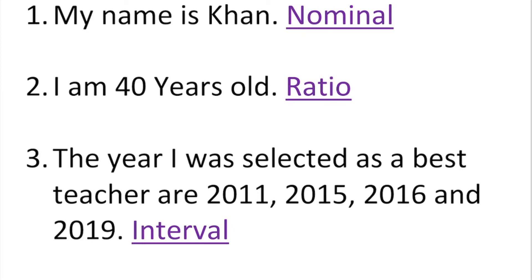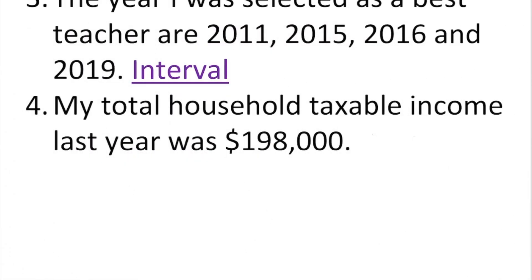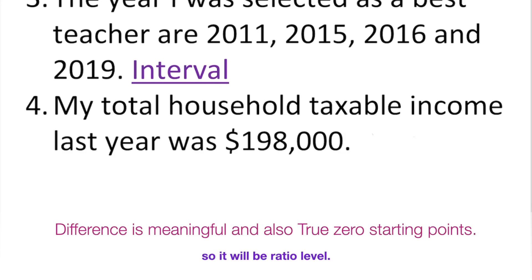Another example: my total household taxable income last year was $198,000 — this is just for an example. So what is that? It's going to be ratio, because it's something out of something. That's ratio.